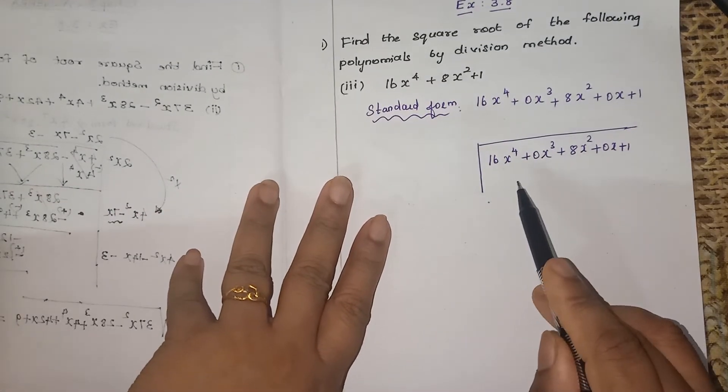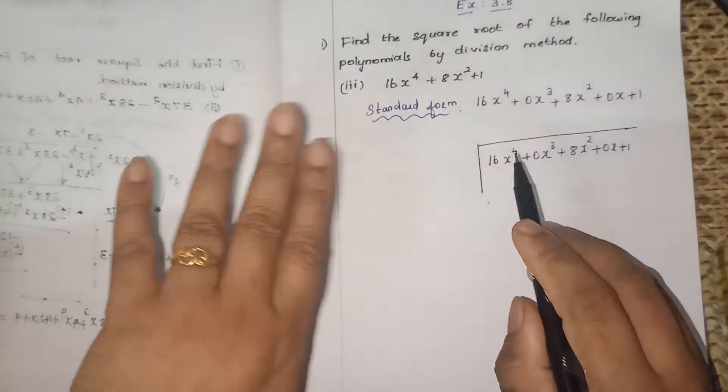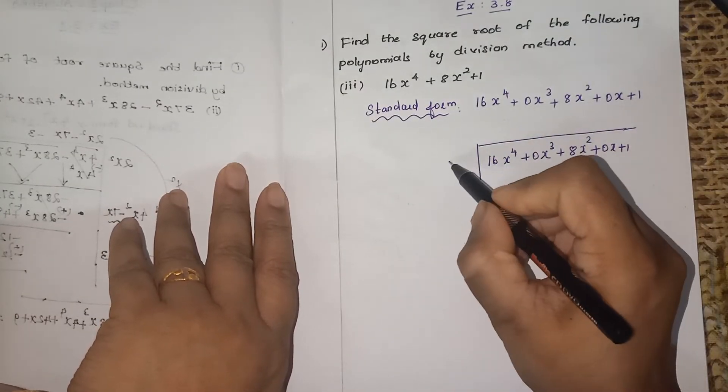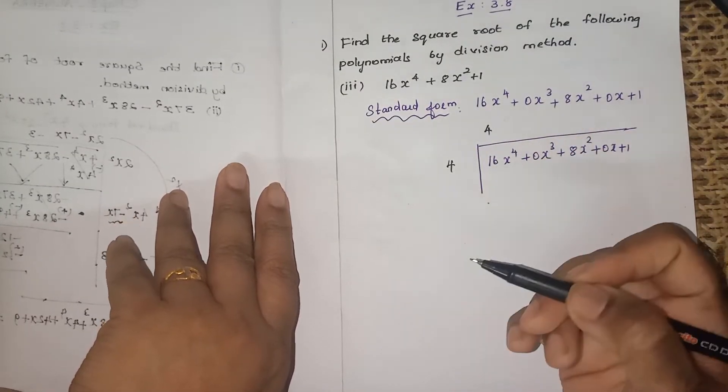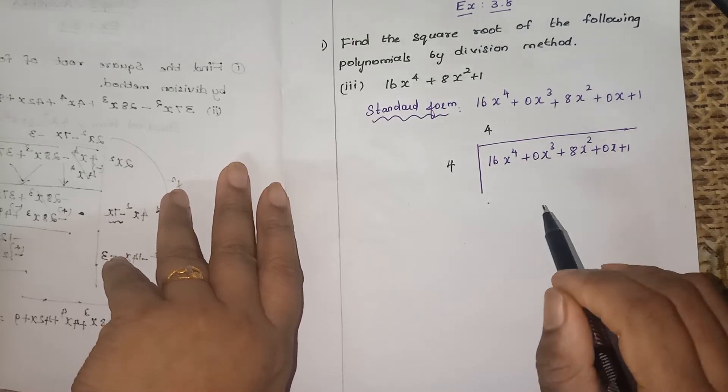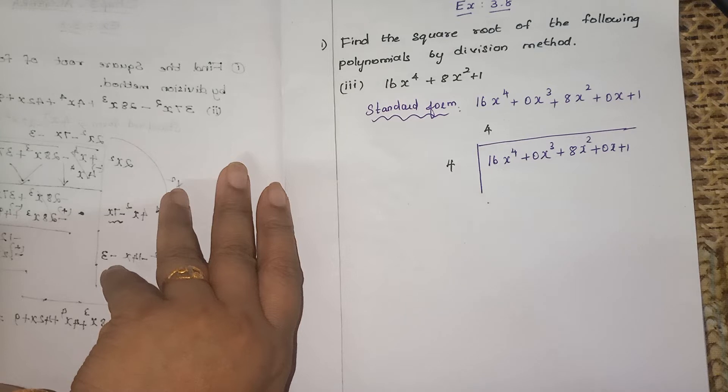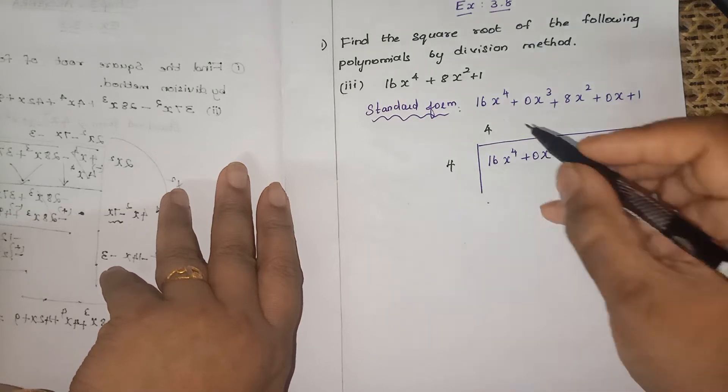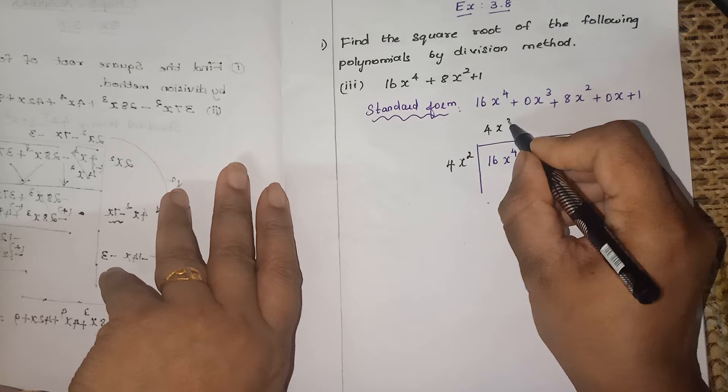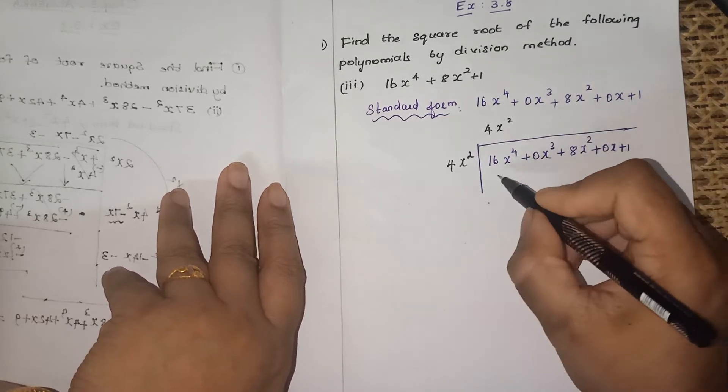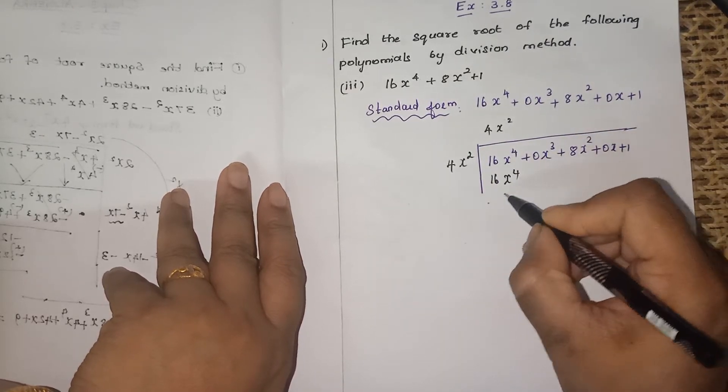Now 16x to the power 4 is there. 16 is a perfect square, so when will you get 16? By multiplying 4, 4s are 16, right? And x to the power 4 is also a perfect square number. When will you get x to the power 4 by multiplying two same numbers? x square. So 4x square into 4x square becomes 16x to the power 4.